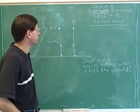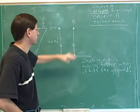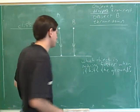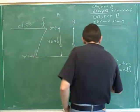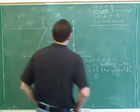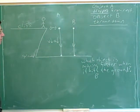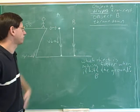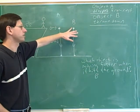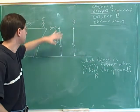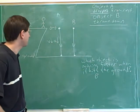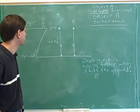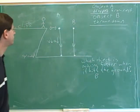So object B is the answer. Object B is going to be moving faster when it hits the ground because it already had a certain downward speed, whereas object A had been dropped from rest.